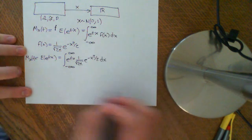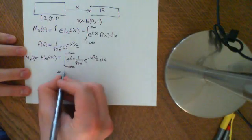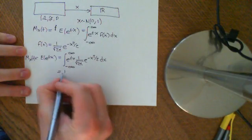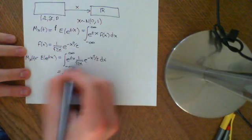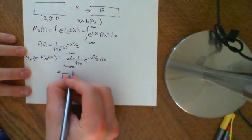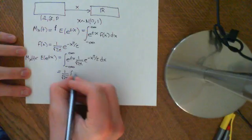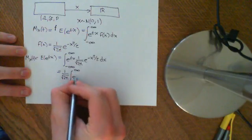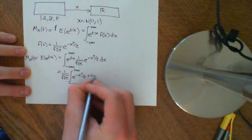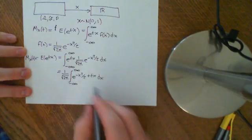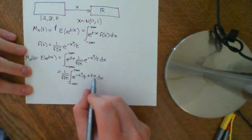That looks like a pretty scary integral, but it's doable. It's called a Gaussian integral, and it was probably Gauss who first worked out how to do integrals like this. We pull out the 1 over the square root of 2π and get the integral from negative infinity to infinity of e to the negative x squared over 2 plus tx dx. The idea is to get rid of the linear term in the exponent.